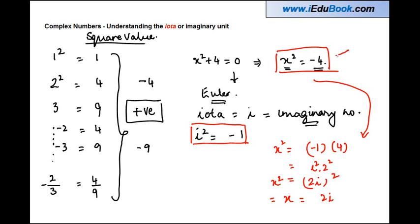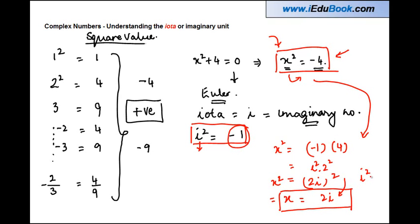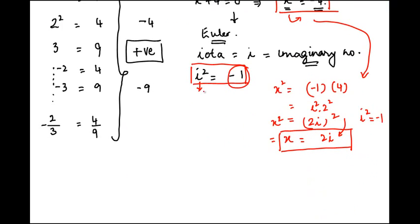We can write this as two i, whole squared, which gives us x equals two i. So instead of a situation where we could not find the value of x, by introducing the concept of iota where i squared equals minus one, we have been able to find the value of the equation as x equals two i, where i stands for iota.